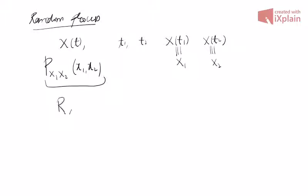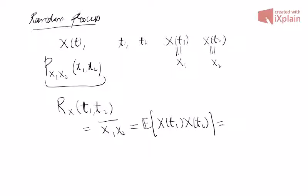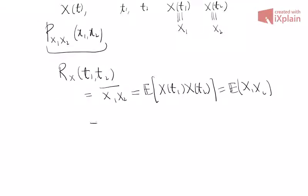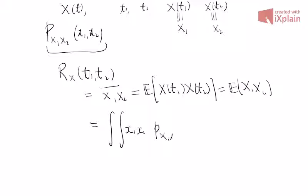If we are given the joint probability density function p(x1, x2), then how will you define the autocorrelation? Rx(t1, t2), also denoted as x1·x2 bar, is the expected value of x(t1)·x(t2), or equivalently E[x1·x2]. If you are given the joint PDF, then you can directly use the definition: the integral of x1·x2·p(x1,x2) dx1 dx2 from minus infinity to plus infinity.